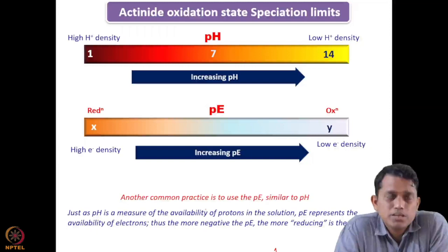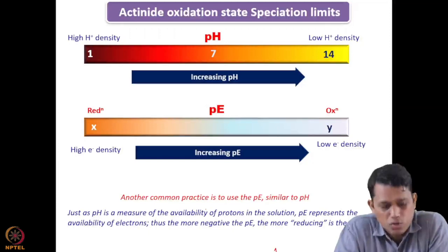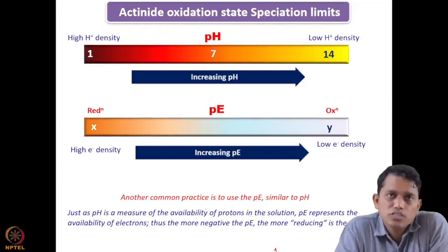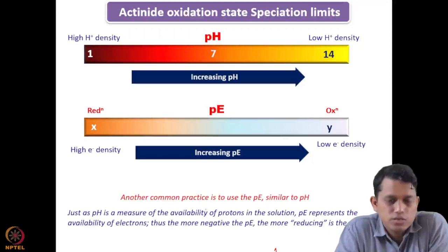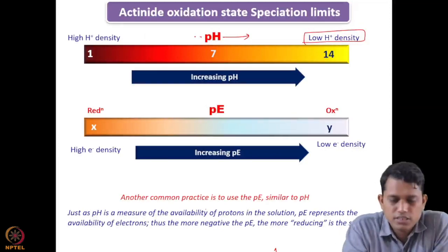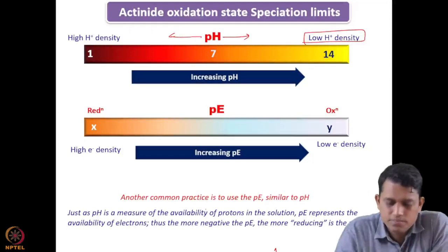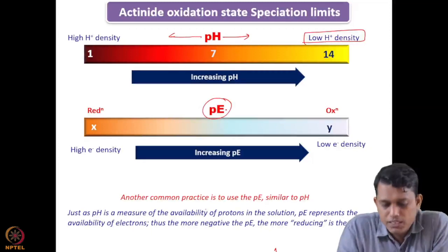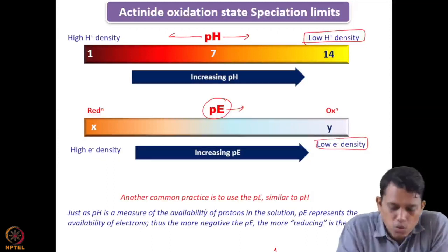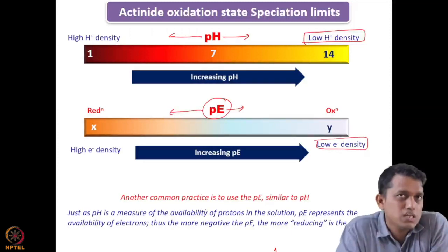We also discussed the concept of PE, which is very similar and analogous to pH. Just as pH is a measure of the availability of protons, PE represents the availability of electrons or the measure of electron activity. As pH increases, proton availability gets lower and lower; when pH decreases, proton availability gets higher. Similarly, when PE is increasing, we have low electron density — meaning more oxidizing conditions — and when PE is getting lower, we have more electrons, meaning reducing conditions.